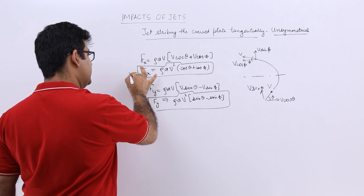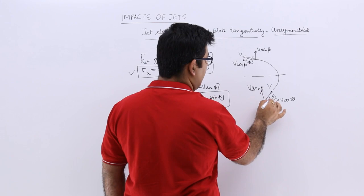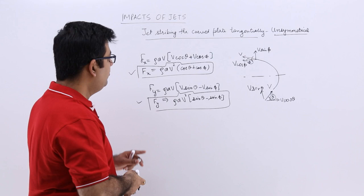So this is the expression for fx and this is the expression for fy. Difference is the angles at outlet and inlet. So this is for an unsymmetrical curved plate. I hope you have understood all these topics. Now let's move on to the next video and talk about some numerical applications of these.